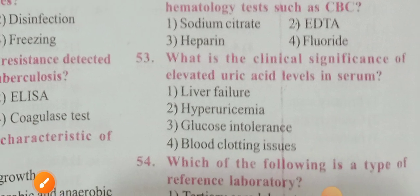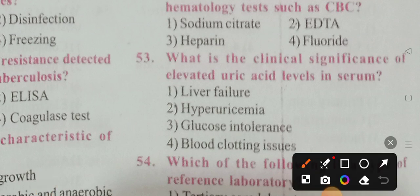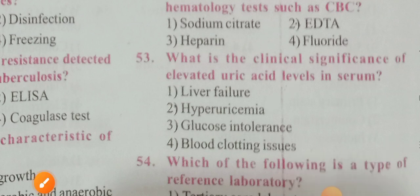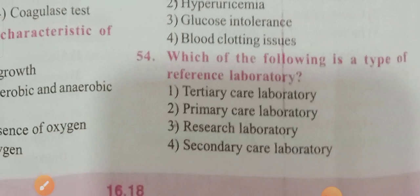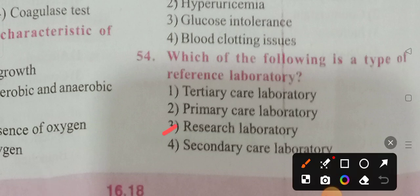What is the clinical significance of elevated uric acid levels in serum? Options: liver failure, hyperuricemia, glucose intolerance, clotting issues. Option 2 is the correct answer — hyperuricemia. Which of the following is a type of reference laboratory? Options: tertiary care, primary care, research laboratory, secondary care. Option 3 is the correct answer — research laboratory.